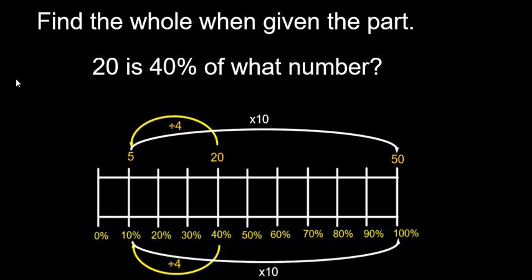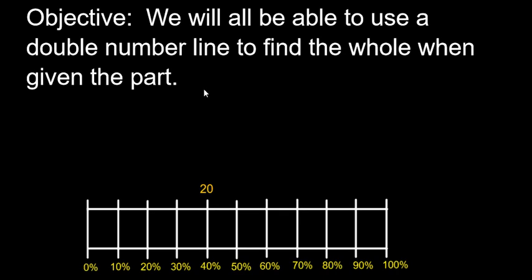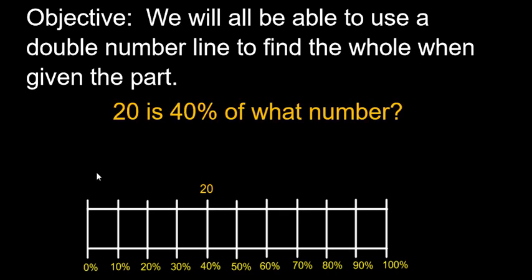Let's walk through the steps. Our objective, again, is to be able to accurately use a double number line to find the whole when given the part. And here's our first problem. 20 is 40% of what number?